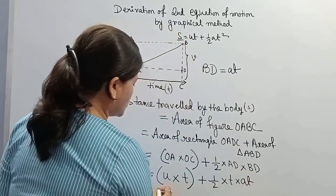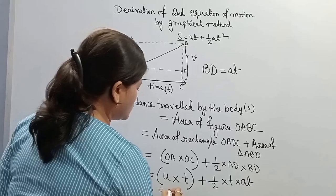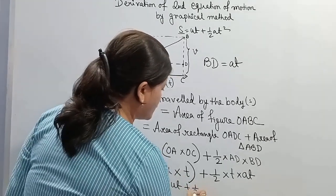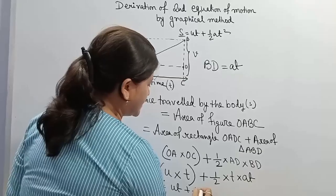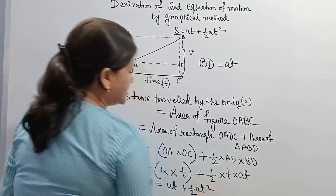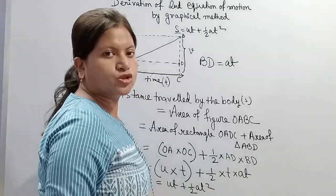So s equals ut plus half t into at, that is at square. This is the second equation of motion.